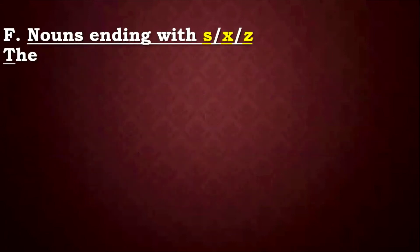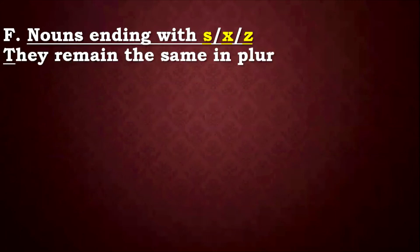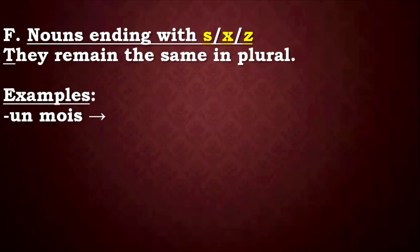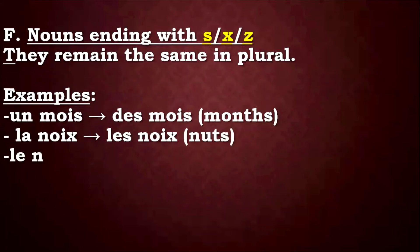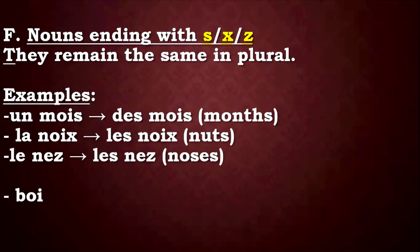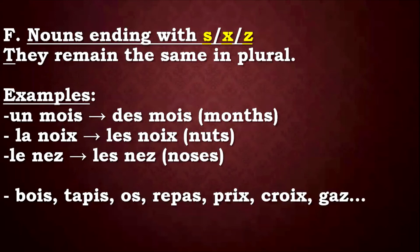Then we have the last group of nouns. These already have S, X, or Z in the singular form. How do you get the plural? It remains the same — you add nothing. For example: un mois, des mois — months. La noix, les noix — nuts.